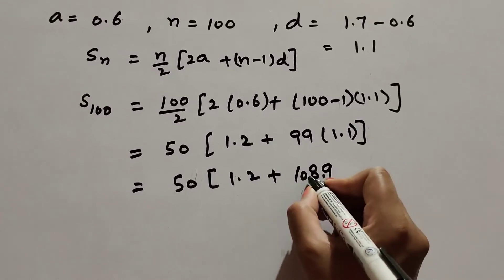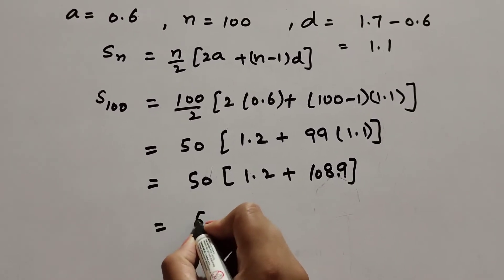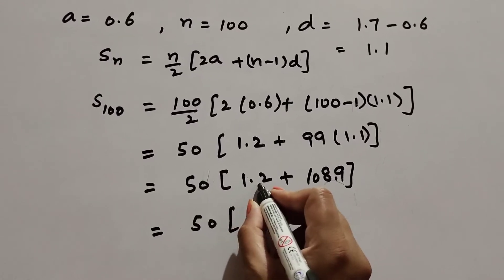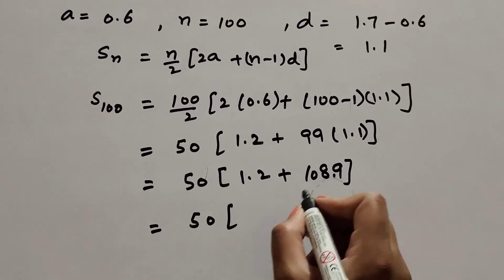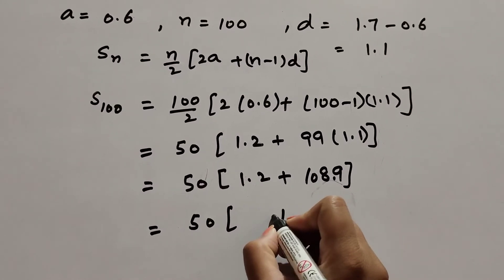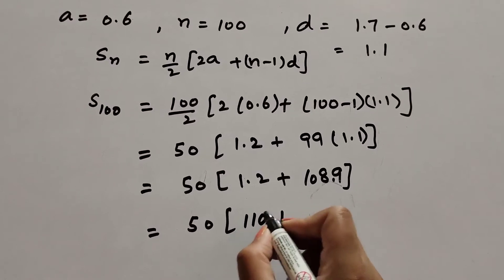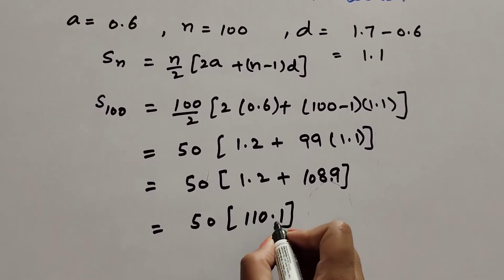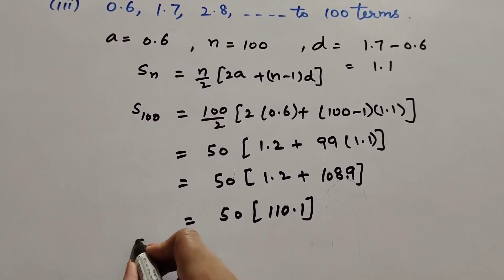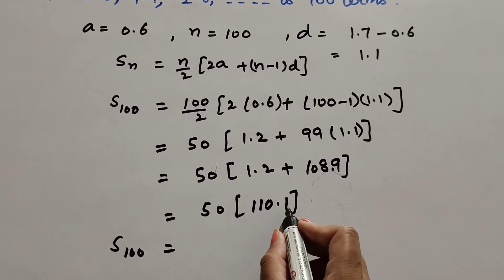This equals 50 multiplied by 1.2 plus 108.9, which is 50 times 110.1.